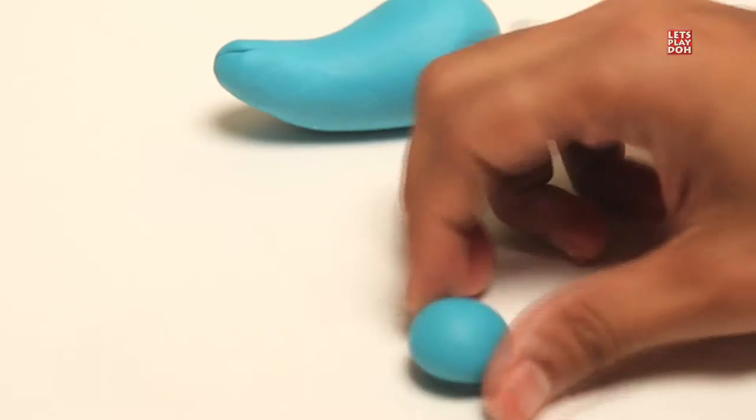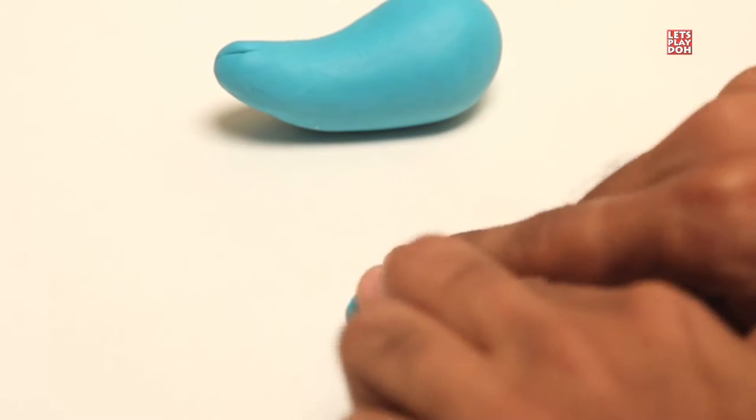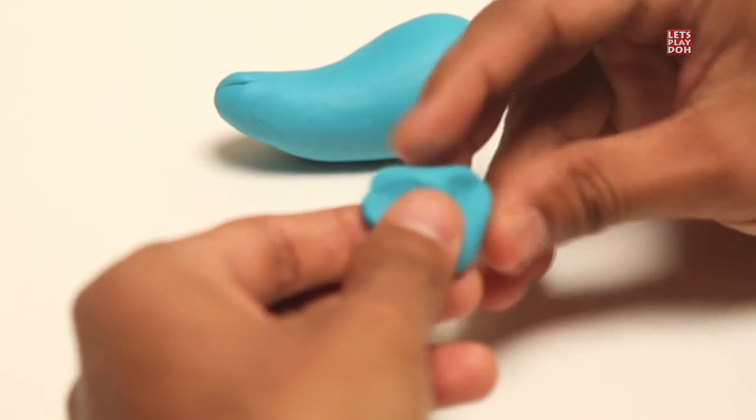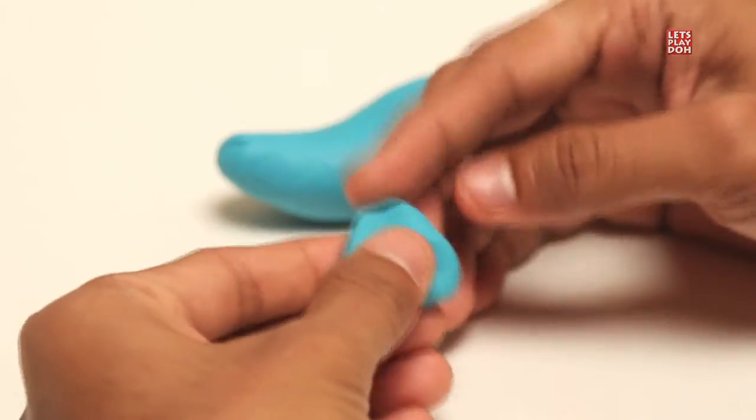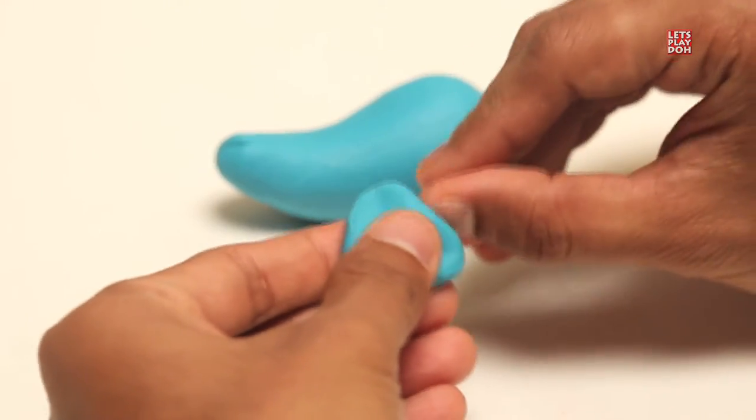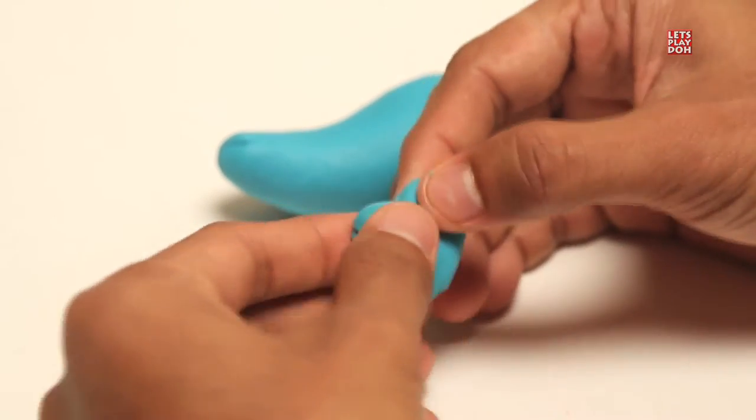And let's take some more blue Play-Doh, and make a smaller ball, and then press down. And here now we're going to use our thumbs. And what we want is to create a little ridge on one side. You see? And on this side, it should have a kind of a ridge.